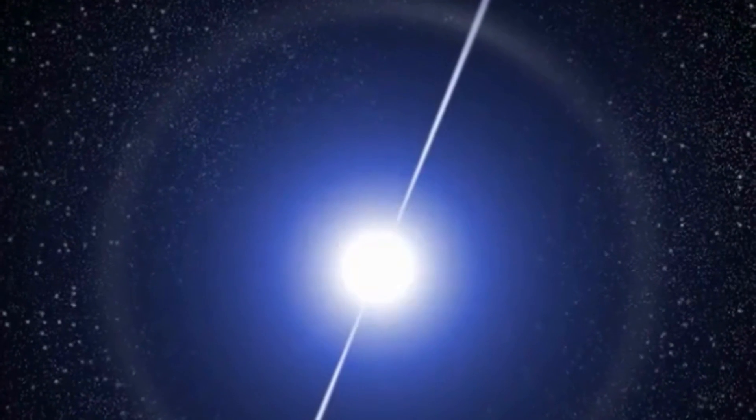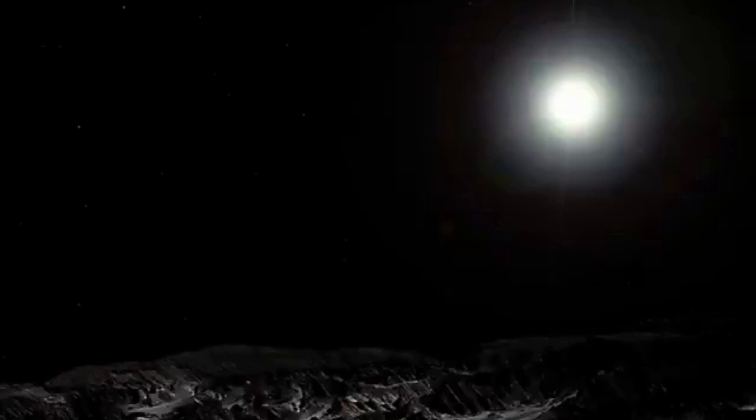6. The fastest known object in the Universe is a pulsar, which rotates at a speed of about 43,000 revolutions per minute.